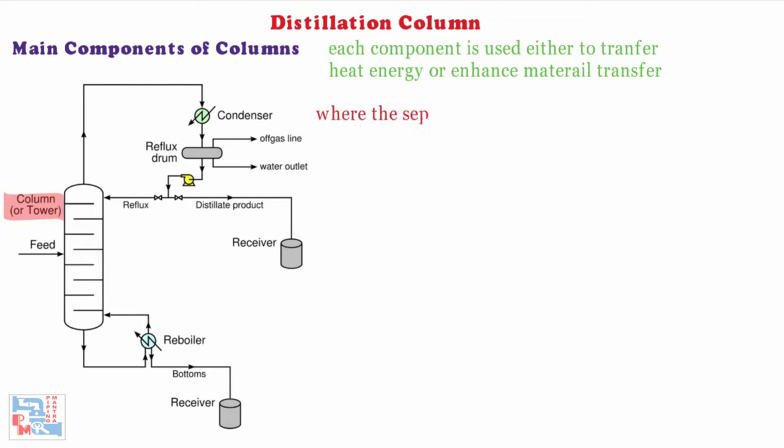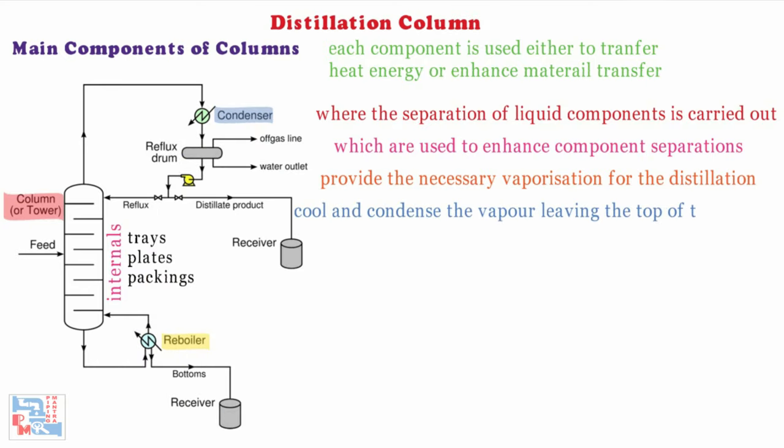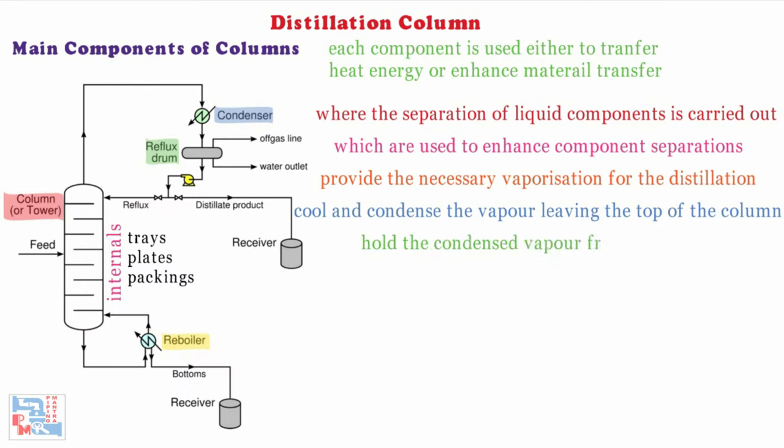A vertical shell where the separation of liquid components is carried out. Column internals such as trays, plates and packings which are used to enhance component separations. A reboiler to provide the necessary vaporization for the distillation process. A condenser to cool and condense the vapor leaving the top of the column. A reflux drum to hold the condensed vapor from the top of the column so that liquid reflux can be recycled back to the column. Receivers are used to store the outputs from top and bottom of the column.